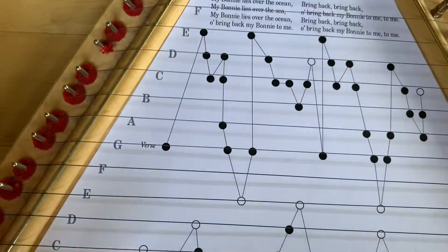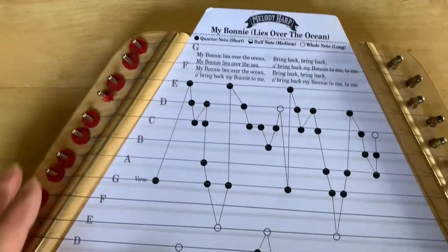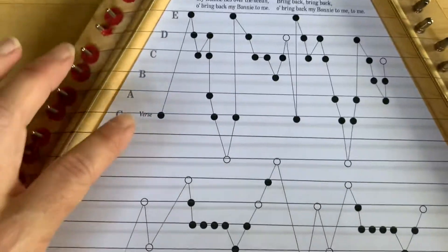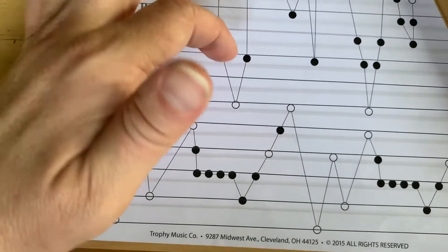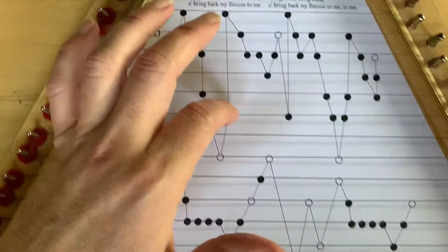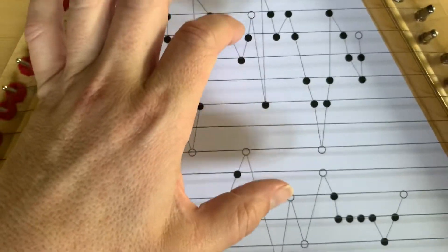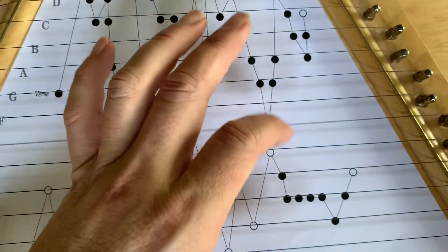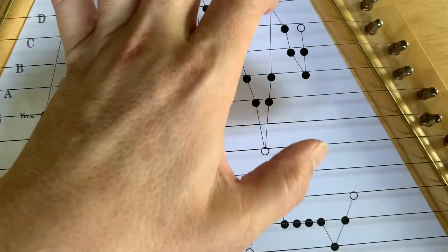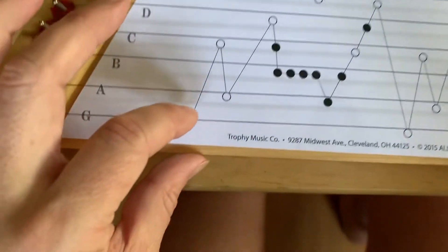So this is kind of complicated because you've got the verse and then you've got the chorus, right? So you would be singing the verse first. And then here's the chorus.